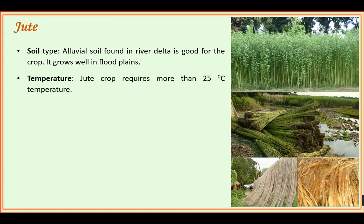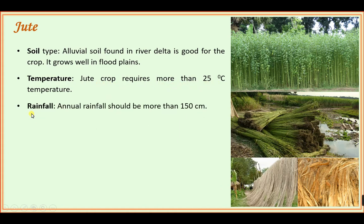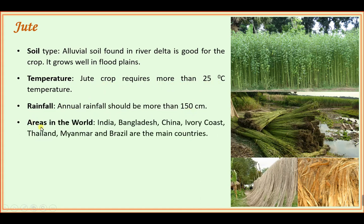Temperature required: jute crop requires more than 25 degrees Celsius. Rainfall: annual rainfall should be more than 150 centimeters.